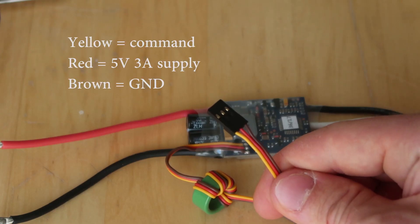The yellow little wire is the command wire, the red little wire is a five volt supply and the brown is the ground.